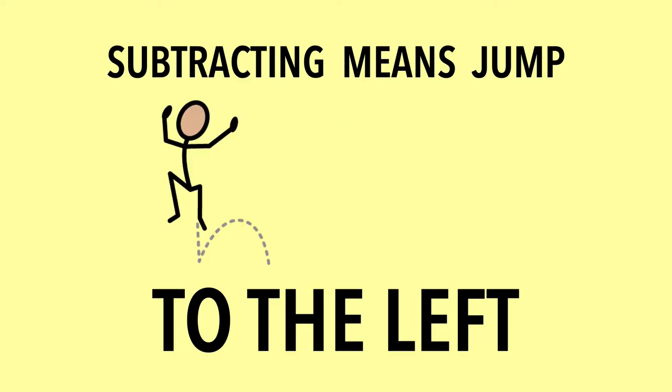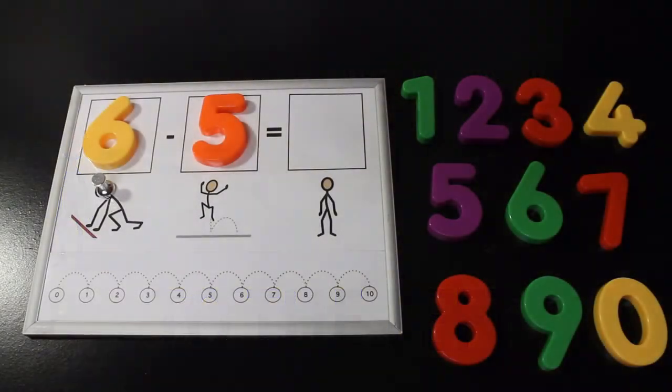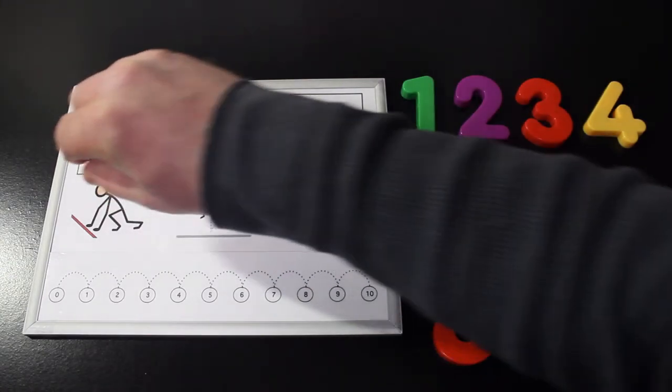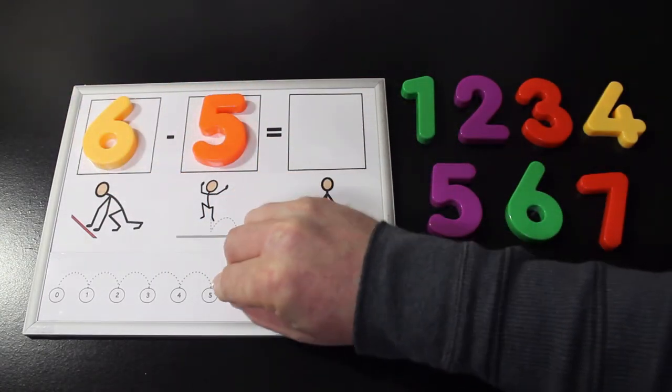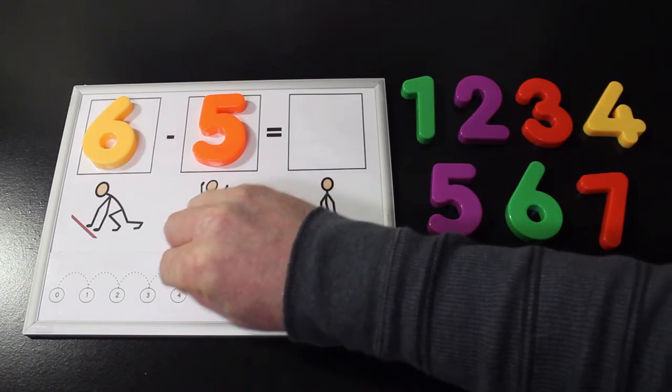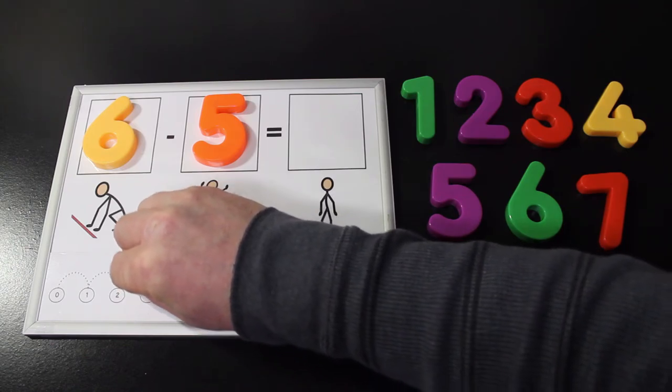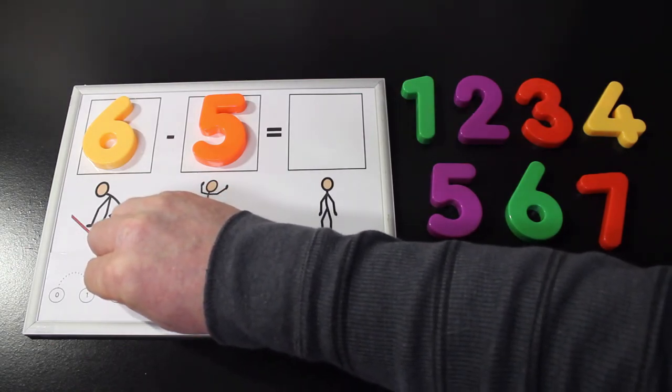Right now I'm going to show you my favorite way of having students interact with this song. 6 minus 5, start on 6, then jump 1, 2, 3, 4, 5.